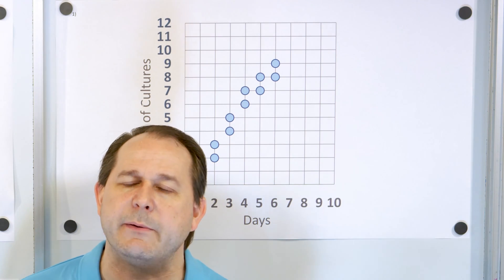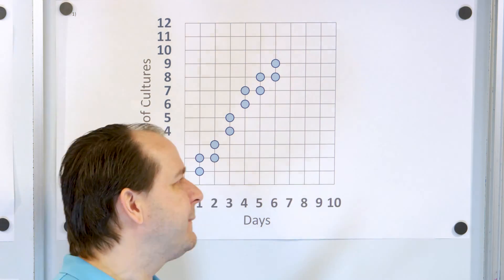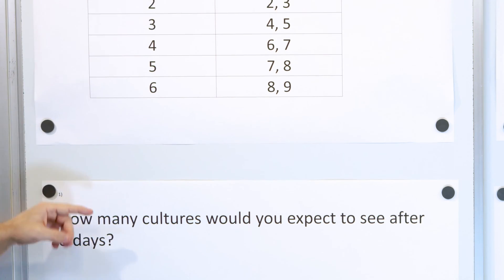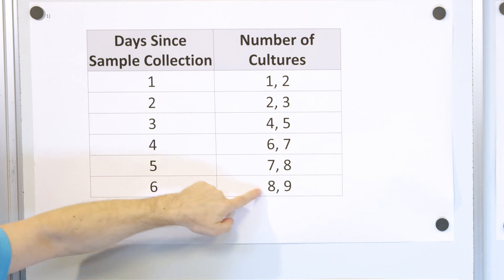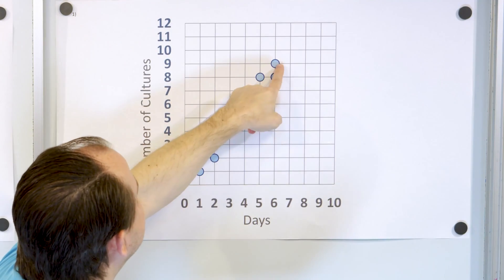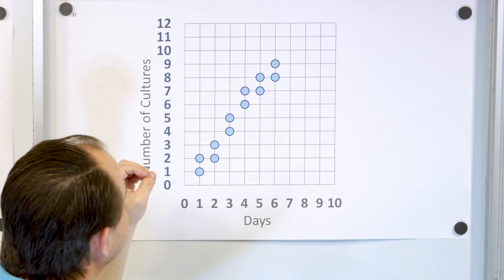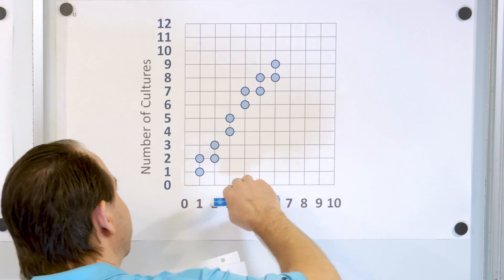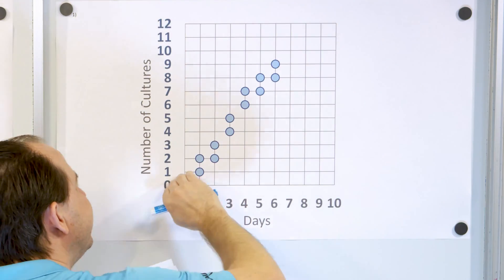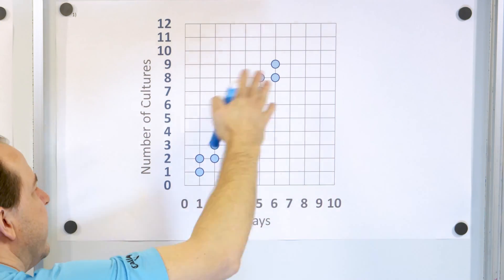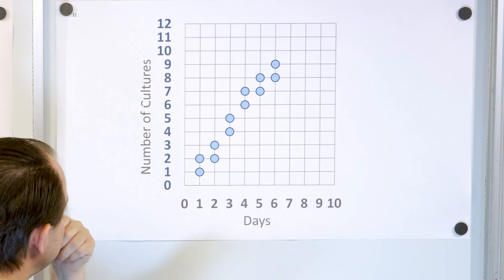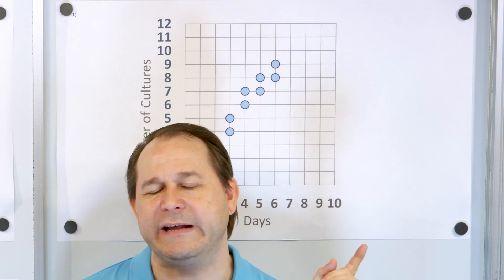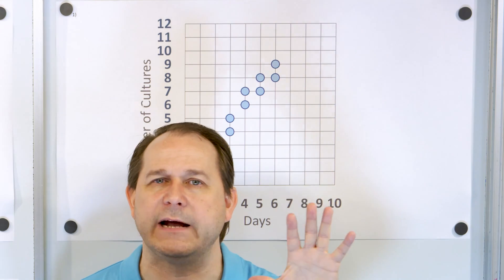It's good to know they're correlated, but we want to use this data to predict something. How many cultures would you expect to see after eight days? My data only records up to six days. So what do I do? Mentally, you draw a line through this data, and then use that line to predict something in the future or the past. That line is called a line of best fit.